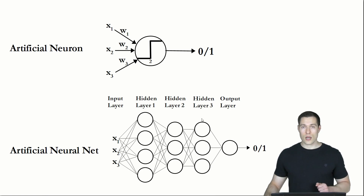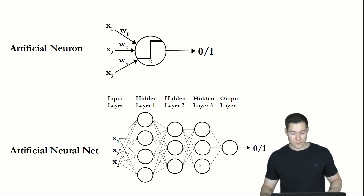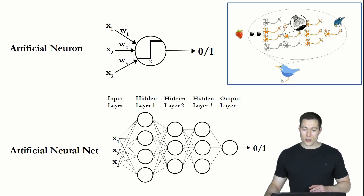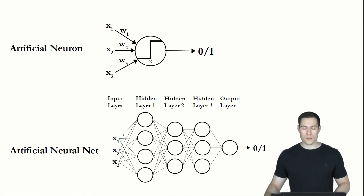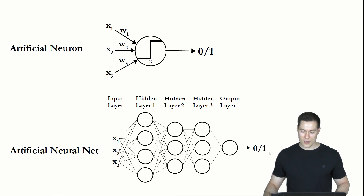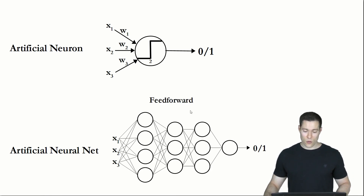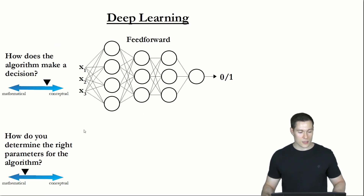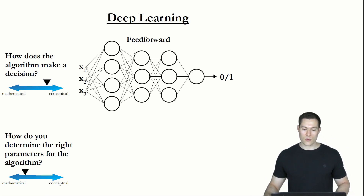Each neuron in a layer is connected to all the neurons in the subsequent layer. We can now use this artificial neural net to make a decision just like the biological one. We put in our input data, each node processes the values as we saw with the single neuron, and the outputs of those nodes serve as inputs for the next layer. We keep going through the layers until we reach the output layer. This is called feed-forward — we feed our input data forward through the net to get the decision. That answers how the deep learning algorithm makes a decision: with this feed-forward algorithm.